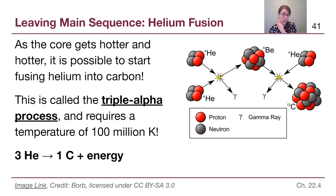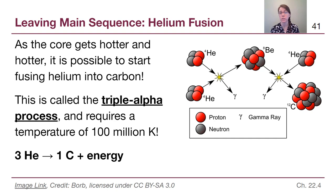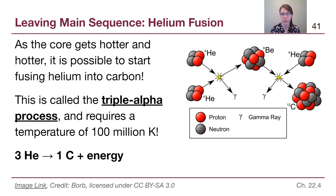As the core gets hotter and hotter, it starts to reach the density and temperature required to turn helium into something else. That process is called the triple alpha process, because helium nuclei are sometimes called alpha particles and we need three of them. There are two initially to create beryllium briefly, but a third is then used to create carbon. Three helium nuclei get turned into one carbon-12 nucleus, and energy comes out in the form of gamma rays. There's less energy here, so this process won't last the star as long as the hydrogen phase, but it is a stage of fusion available to almost all stars.